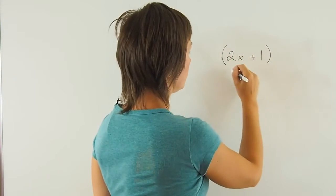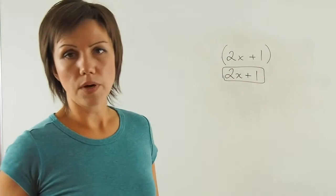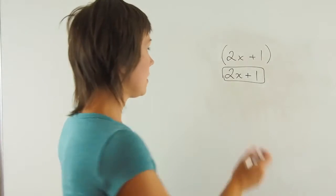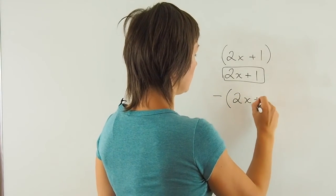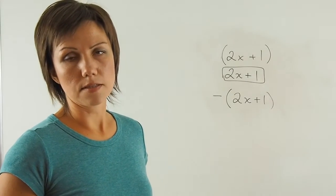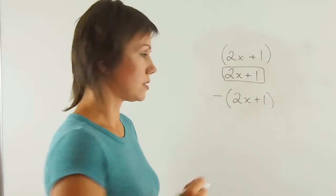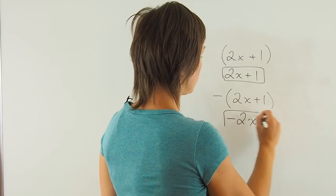Then the bracket expression remains unchanged when we open the bracket. And if I have a negative 1 in front of the bracket, then every single sign inside the bracket changes to the opposite. And it becomes negative 2x minus 1.